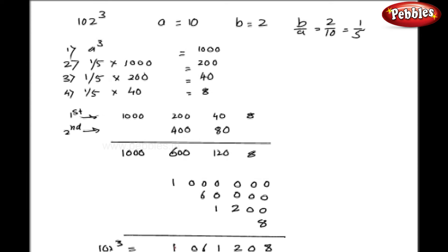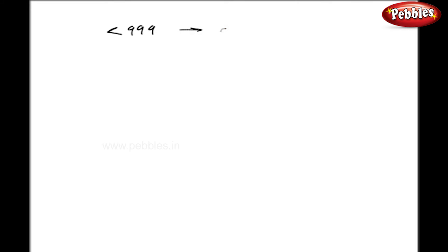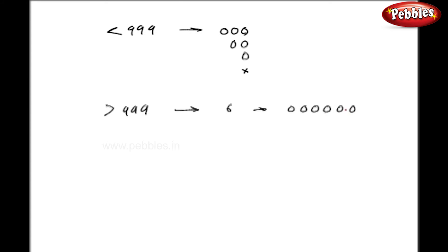So we get the answer in simple steps without any cumbersome calculations. But this method of adding 3 zeros, 2 zeros, 1 zero, and no zero in the last step is only applicable for numbers less than 999. If the number is greater than that, the method is exactly the same; only in the last step, I have to add 6 zeros in front of the first figure, 4 zeros in front of the second, 2 zeros in front of the third, and no zero for the last.